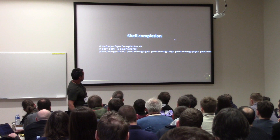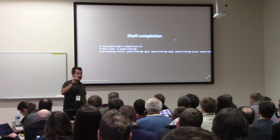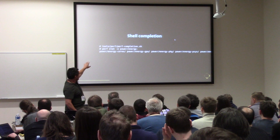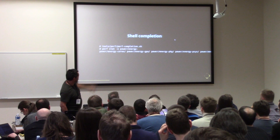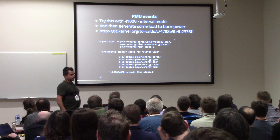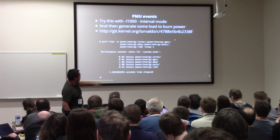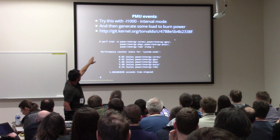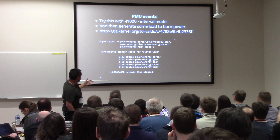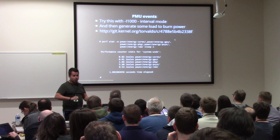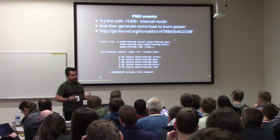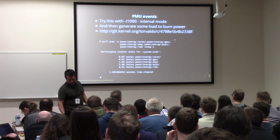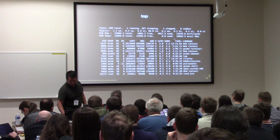Shell completion is interesting because there are so many events that using it invokes perf list to get all possible events on your machine. When you press Tab, you get possible events starting with that string. This demonstrates some PMU events like power/energy-cores and power/energy-GPU, which show how many joules are being consumed by specific parts of your system. Using interval mode with -I 1000 milliseconds, you see every second how power consumption changes as you start a workload or move your mouse.